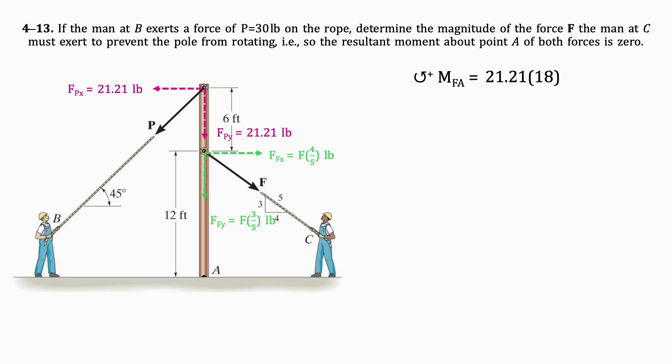Multiplying the Y component of the force by its distance from A, which is 18 feet, we get 381.78 pounds per foot in the counterclockwise direction.